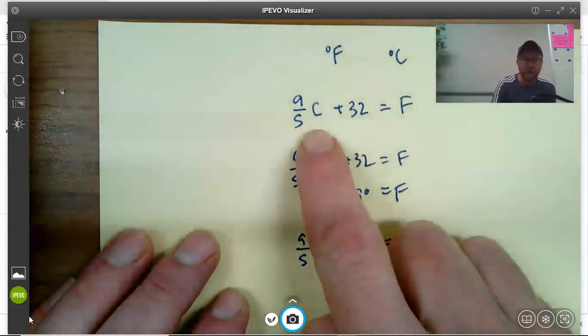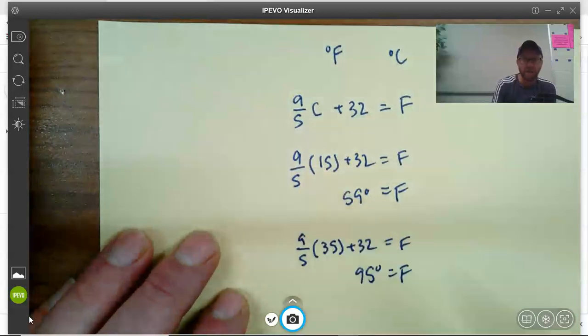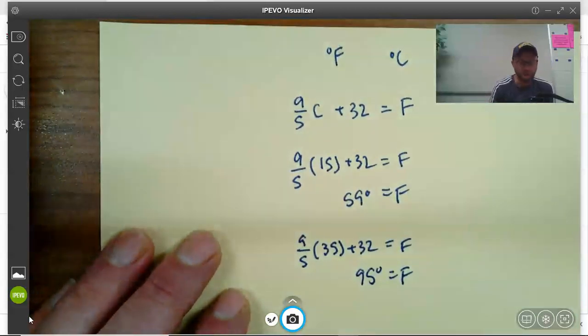So this formula is pretty straightforward. I can just plug in any number I want for degrees Celsius and then we'll get our output in degrees Fahrenheit.